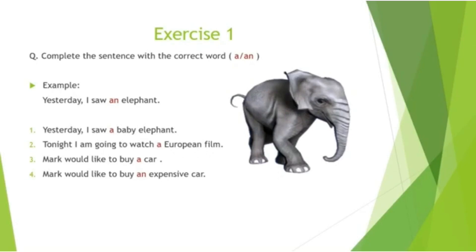Now if the noun is uncountable, for example, 'Mark won the lottery — what luck!' — 'luck' is uncountable in English so we don't use an article. Now let's see the exercises. Complete the sentence with 'a' or 'an'. Example: 'Yesterday I saw an elephant' — because 'elephant' begins with a vowel sound we use 'an'. Exercise one: 'Yesterday I saw a baby elephant' — because 'baby' begins with a consonant sound, we use 'a'. Exercise two: 'Tonight I am going to watch a European film' — 'European' begins with a vowel letter but is pronounced with a consonant sound.